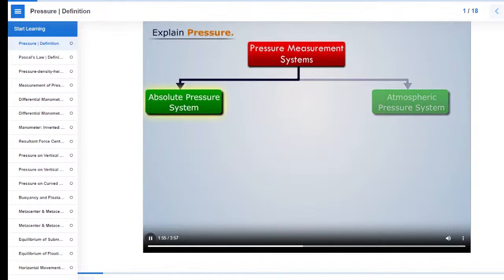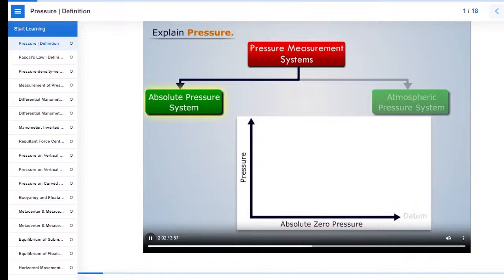In the absolute pressure system, the absolute zero pressure is taken as datum. And the pressure is measured above this datum. And the measured pressure is known as absolute pressure.